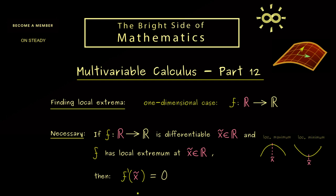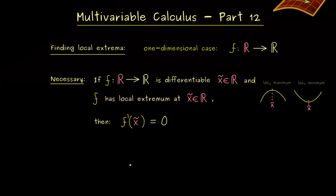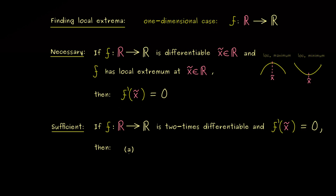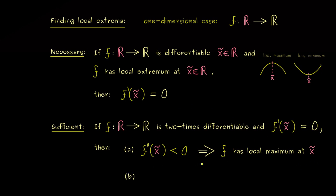However, just having the derivative equal to zero does not guarantee that we find a local extremum — in other words, it's not a sufficient condition. Such a sufficient condition we get when we include the second derivative. Assuming f is two times differentiable everywhere, we still need the first derivative to vanish, and then we have two cases with the second derivative at x̃: if the second derivative is less than zero we find a local maximum, and if the second derivative is positive we find a local minimum.